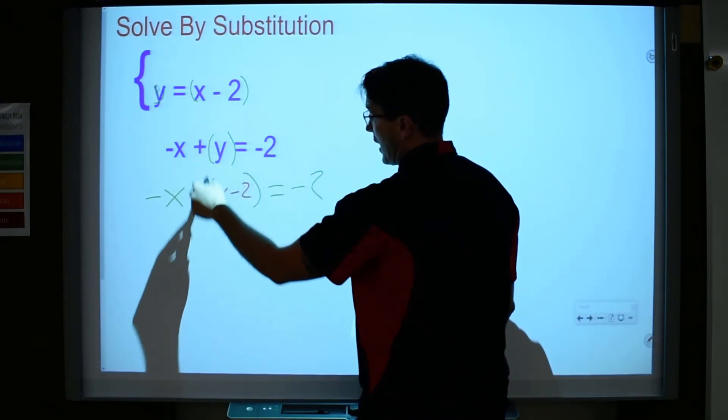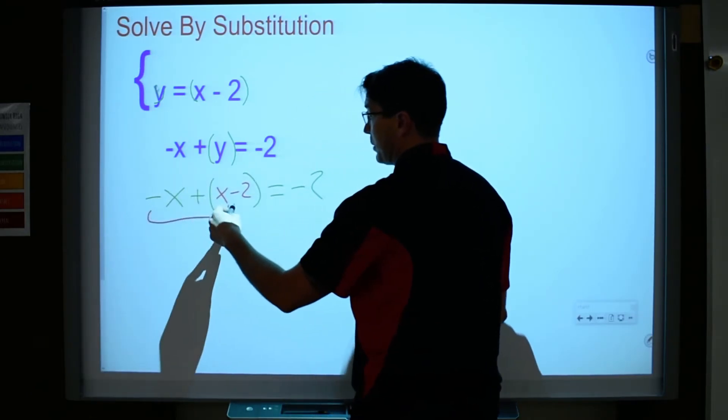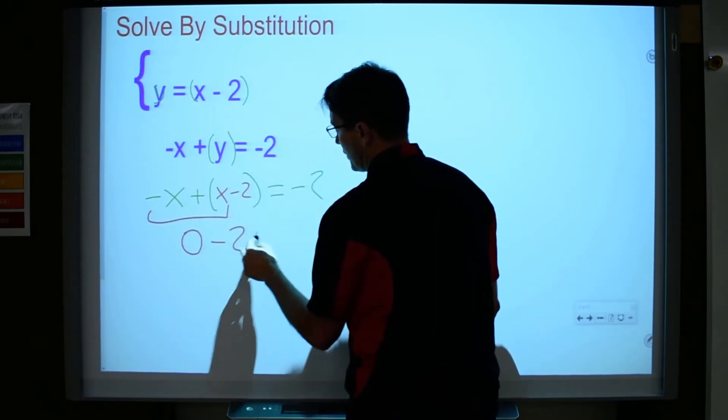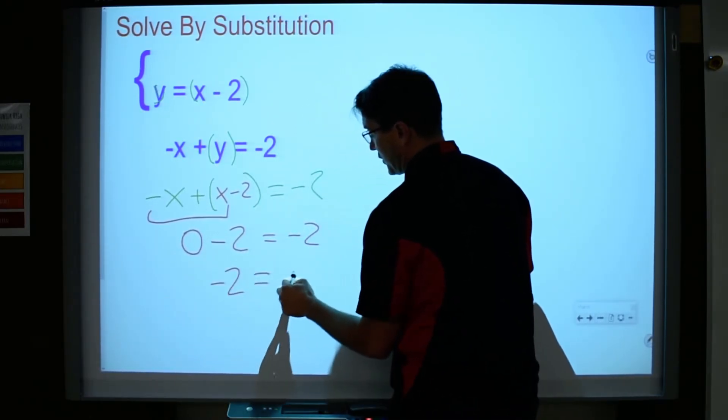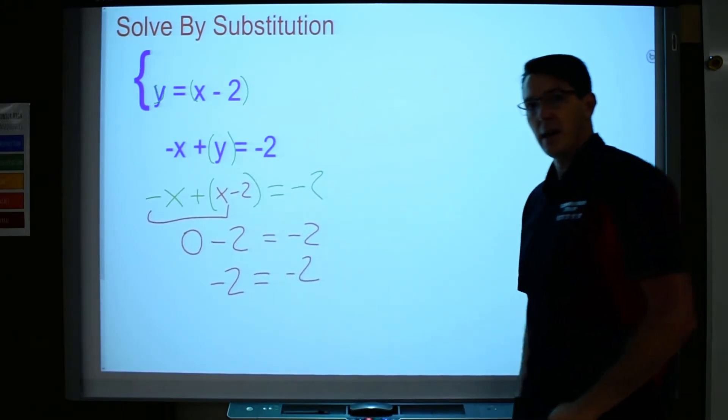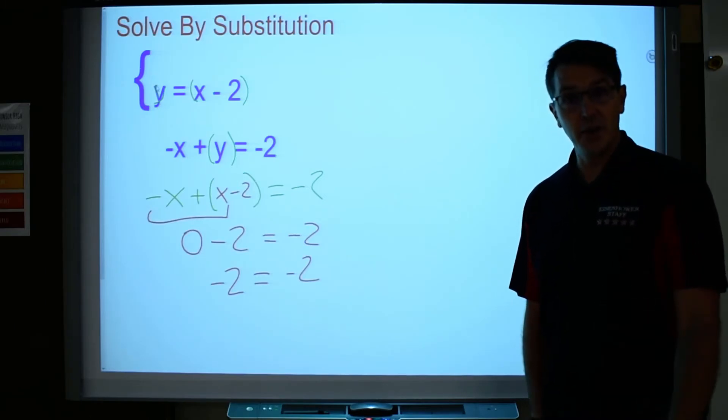There's no coefficient here on the y, so I can get rid of the parentheses just by adding like terms. Negative x plus x is 0 minus 2 equals negative 2. 0 minus 2 is negative 2, and I get negative 2 equals negative 2. And you go, huh? And I say, okay.